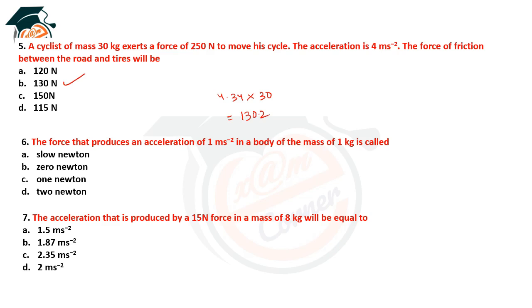The force that produces an acceleration of 1 m/s² in a body of mass 1 kg is 1 Newton — that is the definition of 1 Newton. Next question: the acceleration produced by a 15 Newton force on a mass of 8 kg.